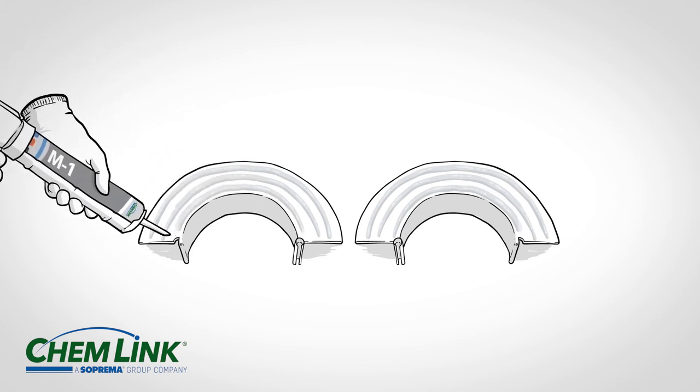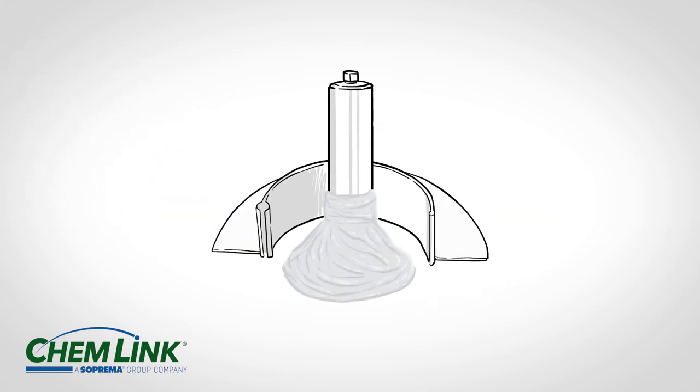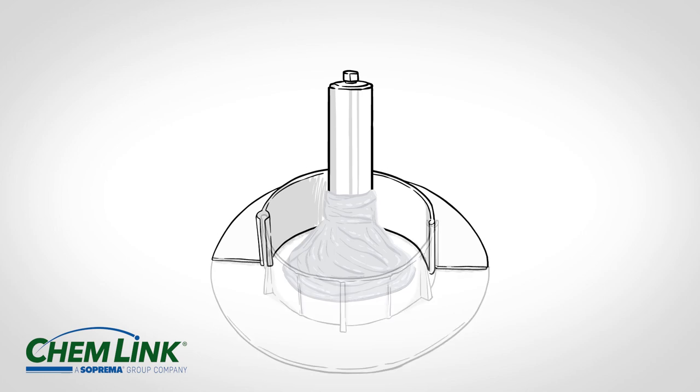Next, apply three lines of the M1 to the underside of the E-CURB. Place the first side down and press down firmly until sealant extrudes out.